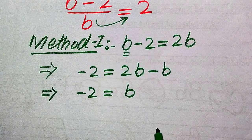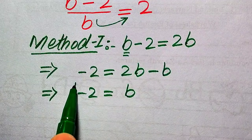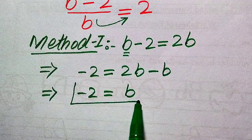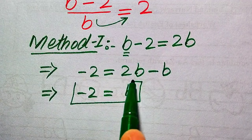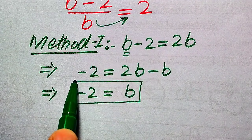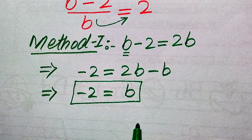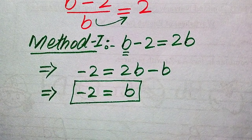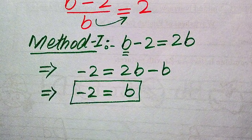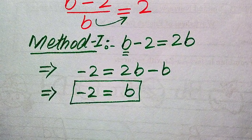So in the first method we get only one root of the given equation, and that is b equals minus 2.